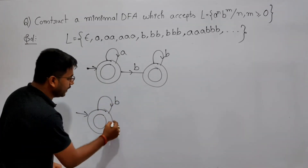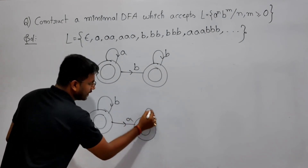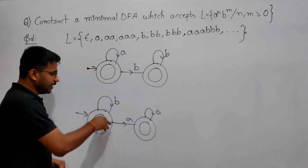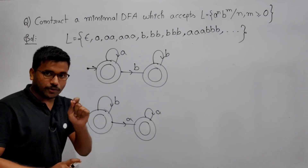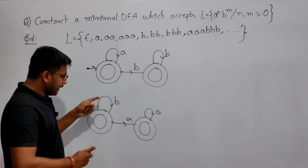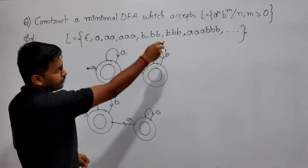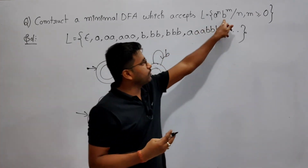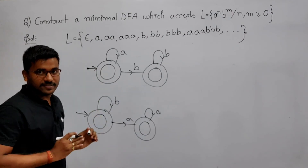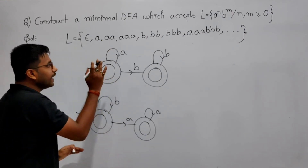Some students make a common mistake: they put the loop of 'b' in the beginning state. The problem with this approach is that it allows strings like 'ba', which do not belong to the language. After seeing a 'b', there should be no 'a'. That is why we keep the loop of 'a' at the initial state only.